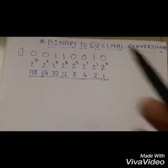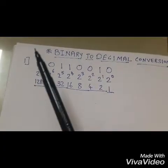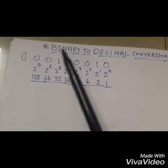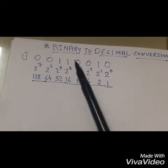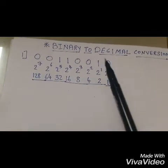Hello friends, in today's video I will be teaching you how to do the conversion of binary to decimal. First of all, what is binary? Binary is nothing but a bit of information which is of 8 bits. Here I have taken an example of a binary number as 0 0 1 1 0 0 1 0.